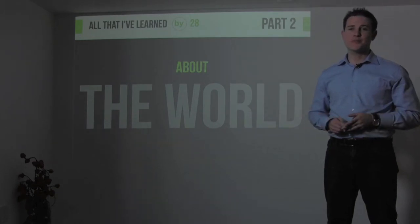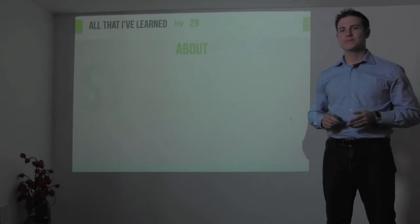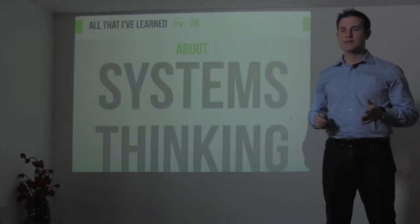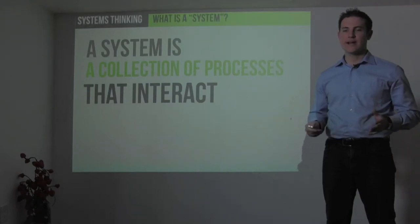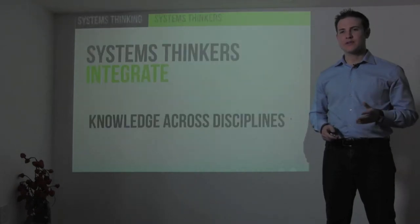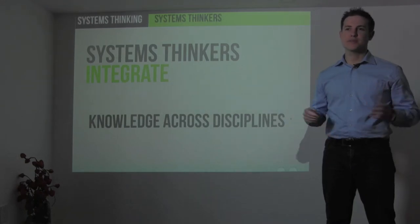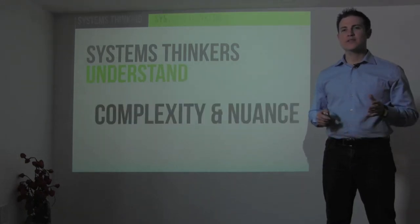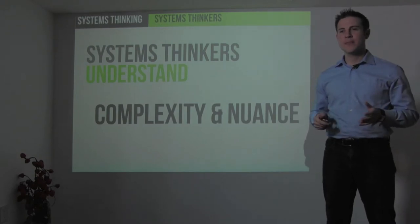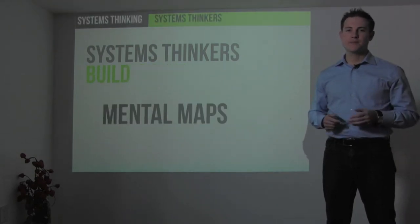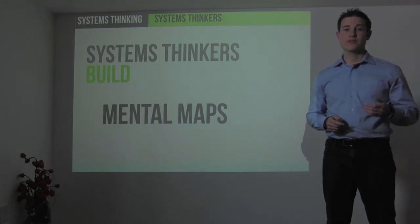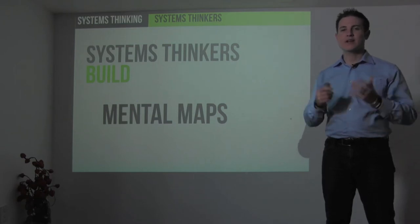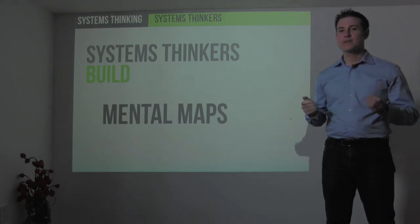The first section of part two is called systems thinking. Let's start by defining what a system is. A system is simply a collection of processes that interact. System thinkers are those who can integrate knowledge across multiple disciplines. They understand complexity and nuance, and they're able to build mental maps, integrating ecological systems, human systems, and internal and external systems into one understanding of the world and humanity.